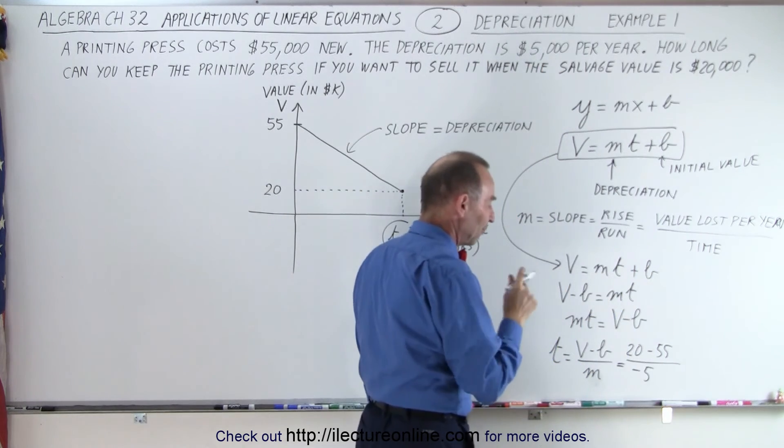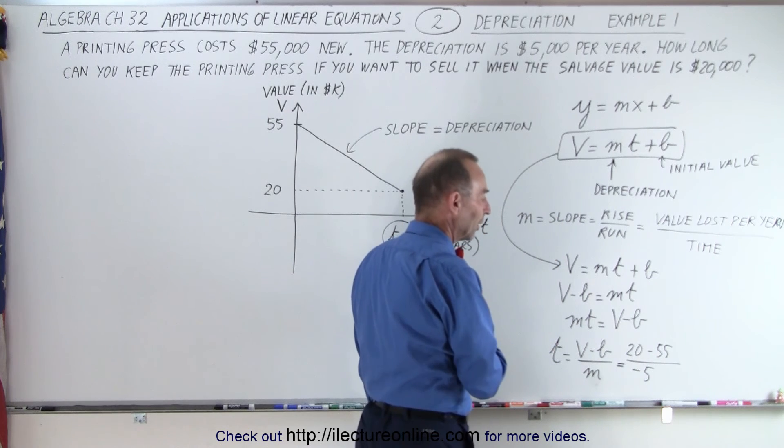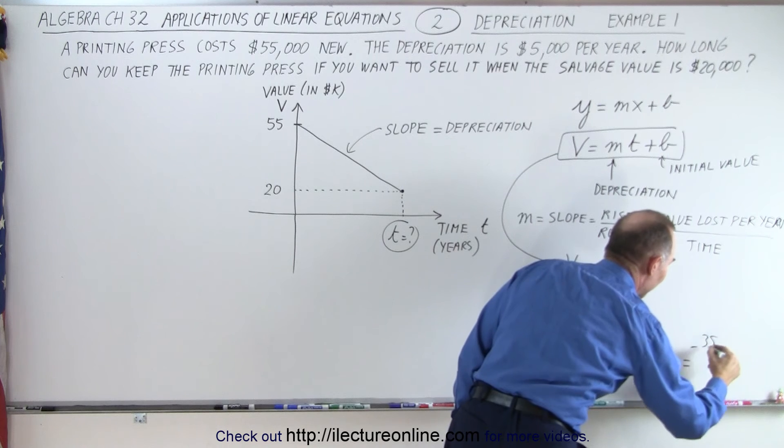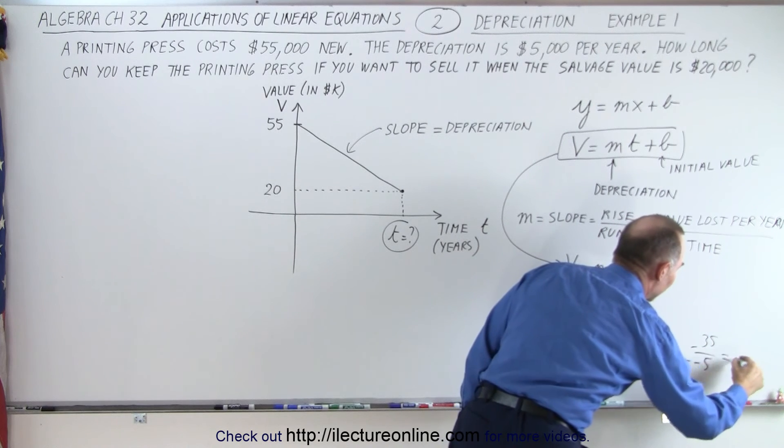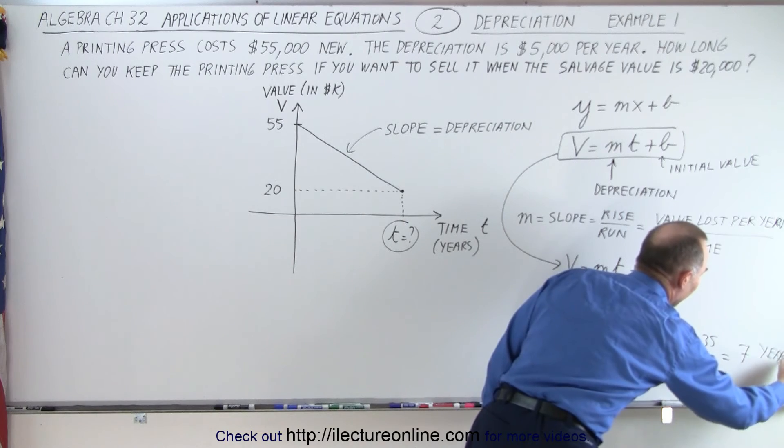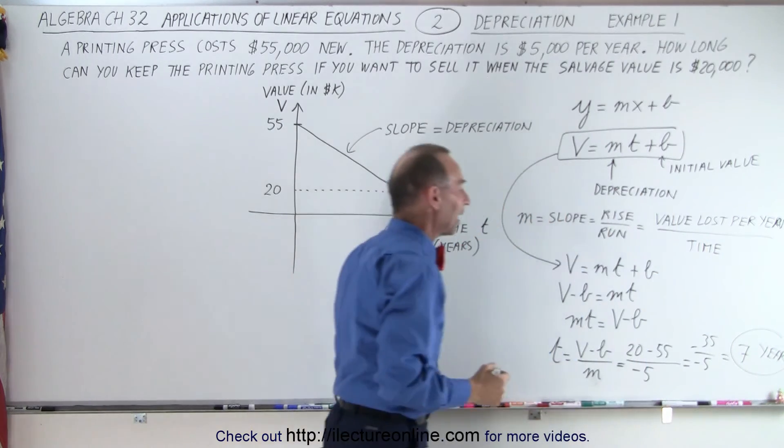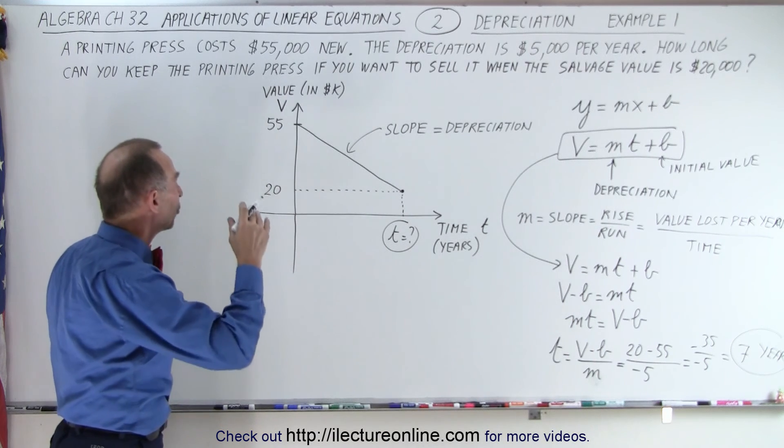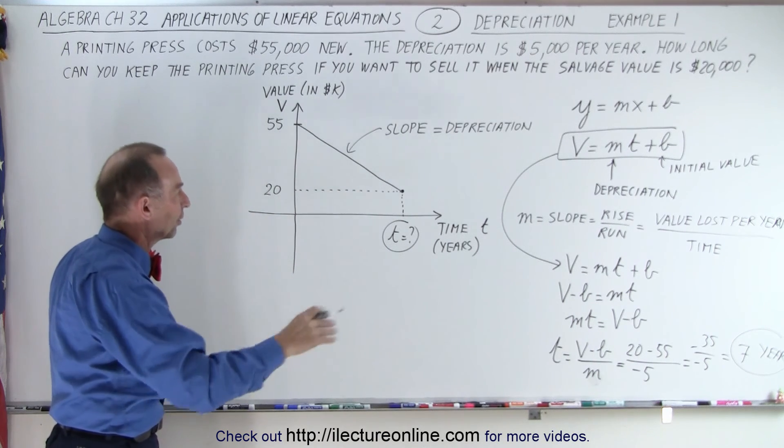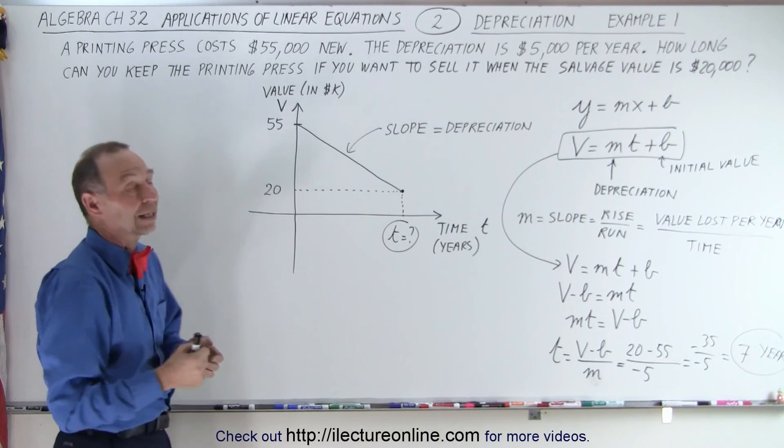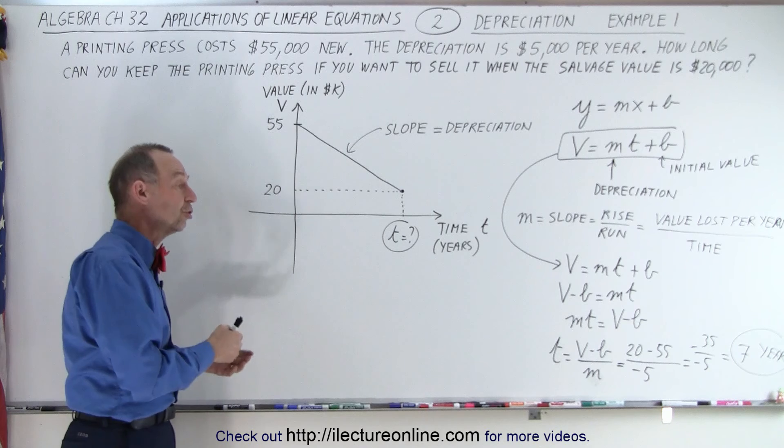And that will give me the number of years before the value is dropped to $20,000. So 20 minus 55 is minus 35 divided by minus five. And so it would be seven. Of course, that would be in terms of years. So that means I can keep my machine for seven years. By then, the value will have dropped to $20,000. Then I want to liquidate or sell, get the salvage value of $20,000, and then I can maybe invest into a new machine.